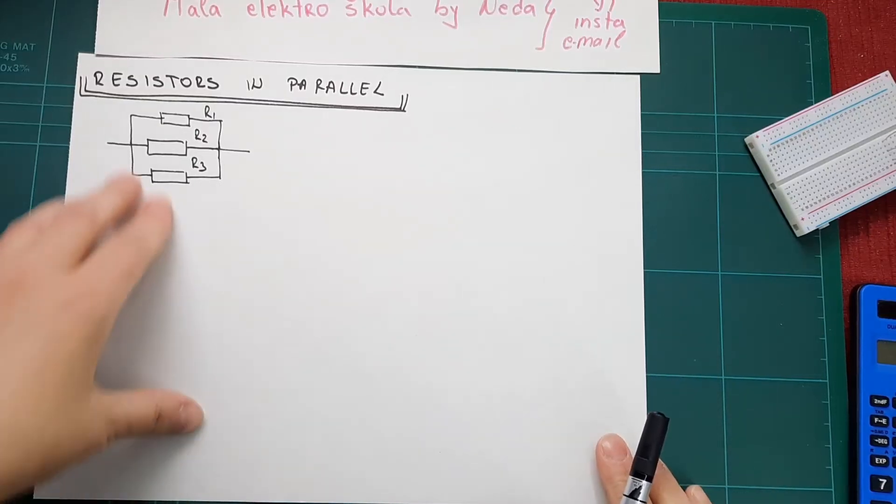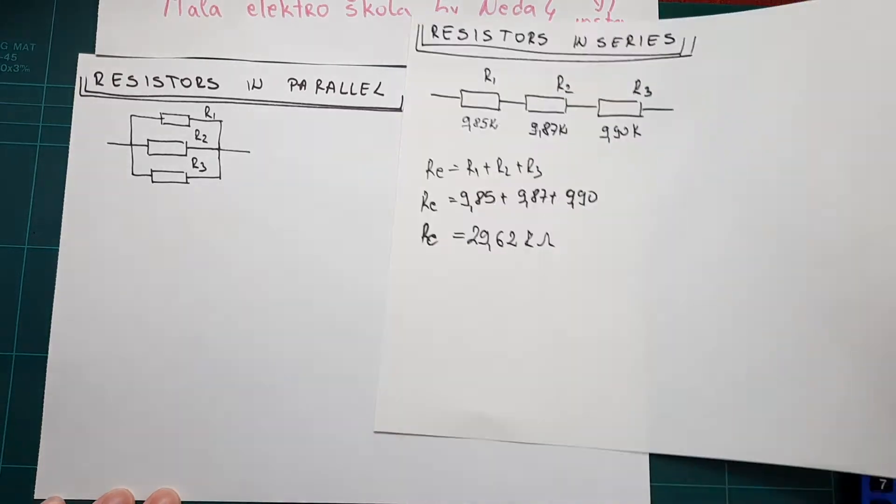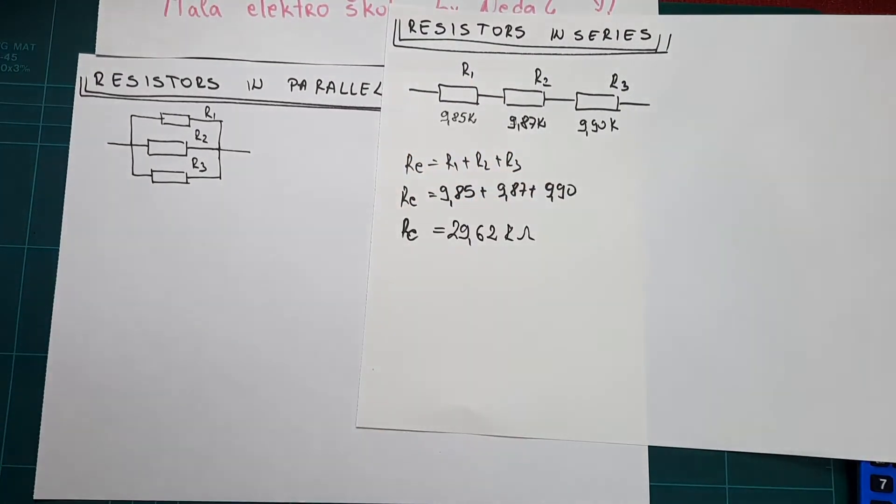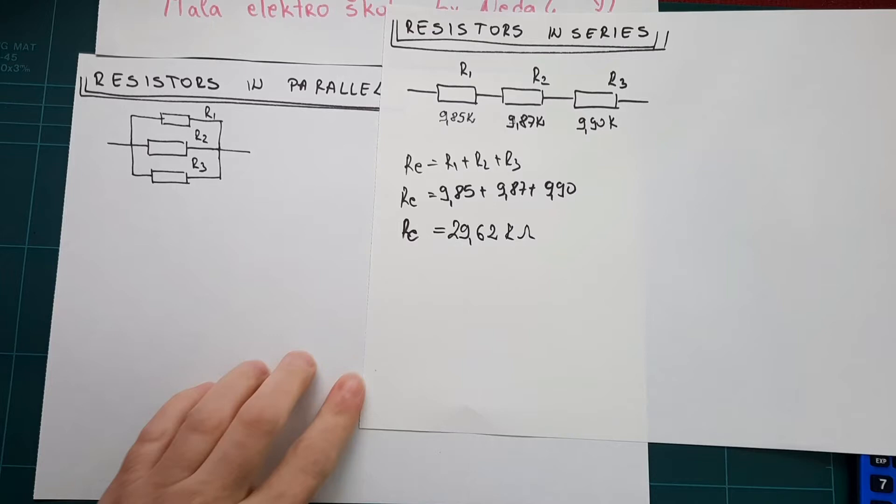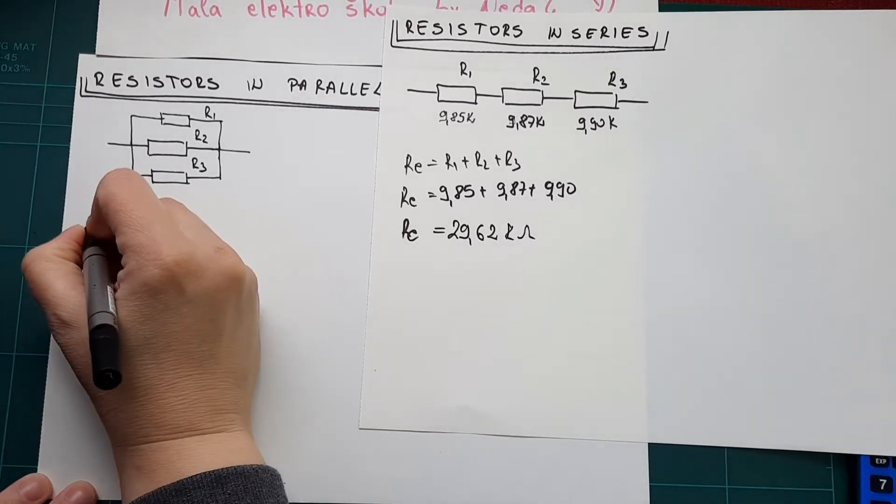Let's do the resistors in parallel. To not make any further measurement, we will use those values. As we know, we count like this.